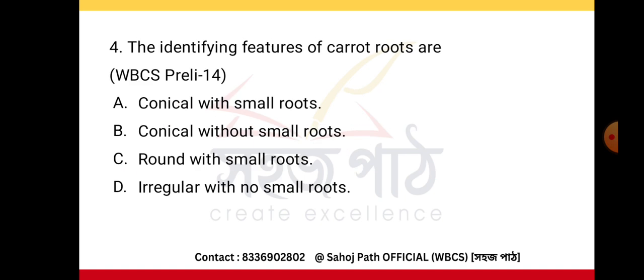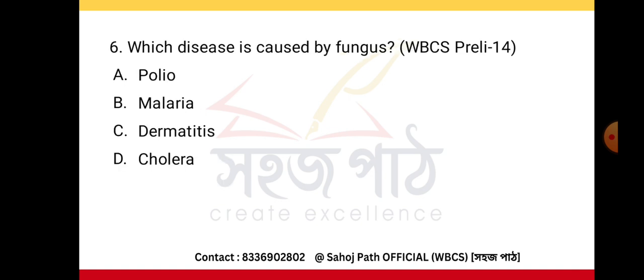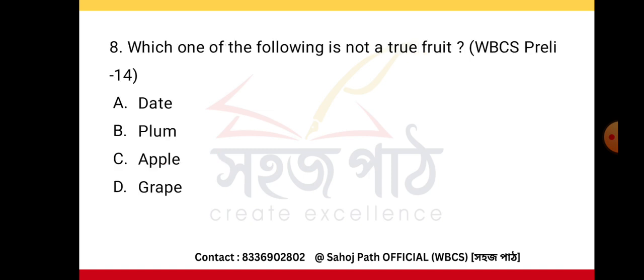The identifying features of carrot roots are conical with small roots. The protein deficiency disease is Kwashiorkor. The disease caused by fungus is dermatitis. Clove is obtained from flower buds. The following is not a true fruit: apple.